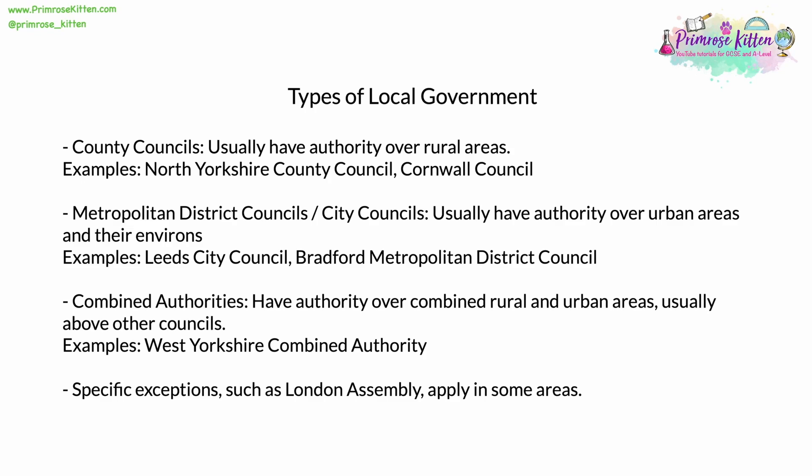Combined authorities are larger authorities which have authority over combined rural and urban areas. They're usually above other councils and authorities and may consist of combined councils which they direct. A key example is the West Yorkshire Combined Authority, which includes several local government councils such as Kirklees and Leeds. There are specific exceptions where special areas have a different type of local authority, such as the London Assembly, an elected body. These only apply in very specific areas.